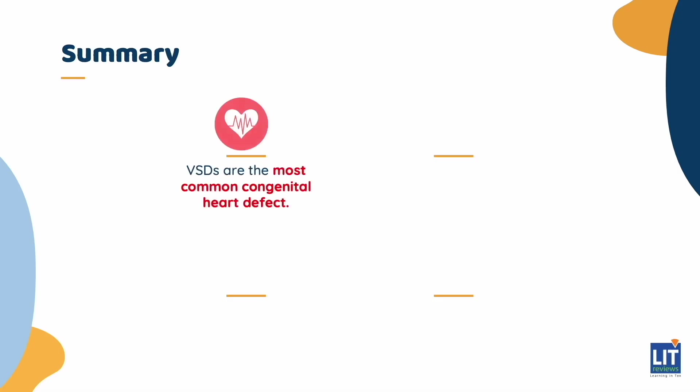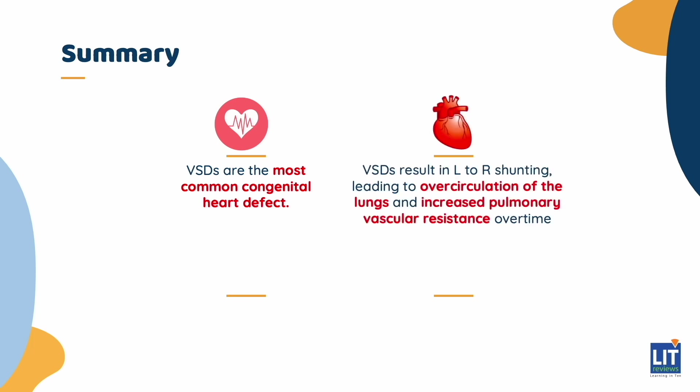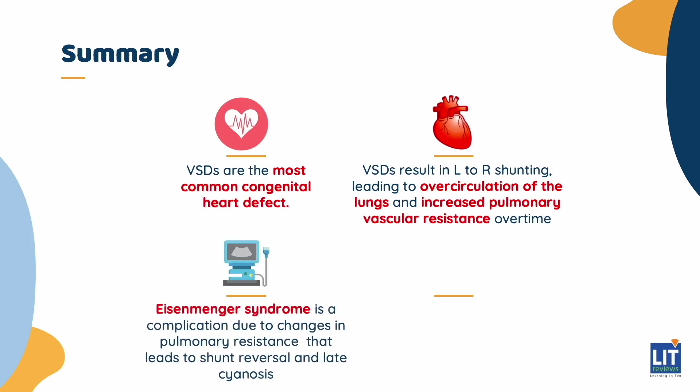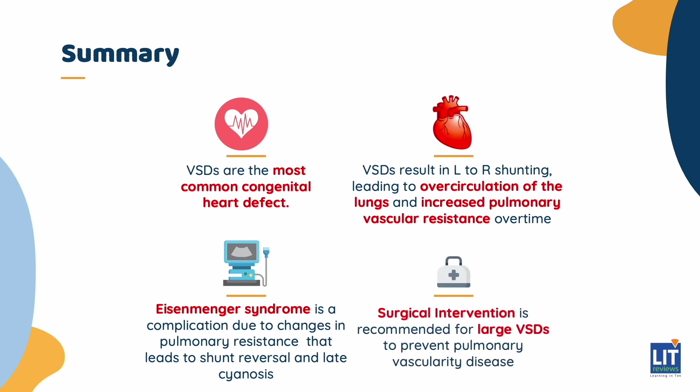In summary, VSDs are the most common congenital heart defect. They lead to left-to-right shunting, causing over-circulation of the lungs and elevation in pulmonary vascular resistance over time. Eisenmenger syndrome is an important complication due to changes in pulmonary resistance that lead to reversal of the shunt and late cyanosis. While small and asymptomatic VSDs do not require much treatment, large VSDs should undergo early surgical intervention to avoid pulmonary vascular disease.